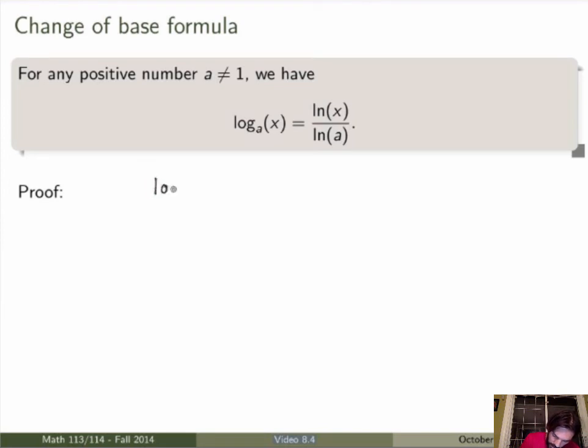So log in base a of x is equal to y if and only if x is equal to a to the y. Right? This is just a statement of the inverse function. So now I can take this expression and take the natural logarithm on both sides. I'll get that ln of x is equal to ln of a to the y.